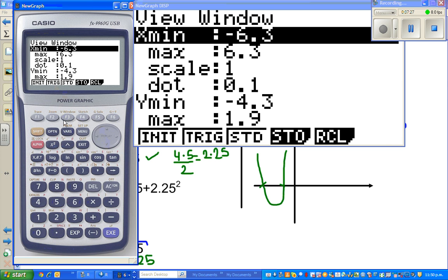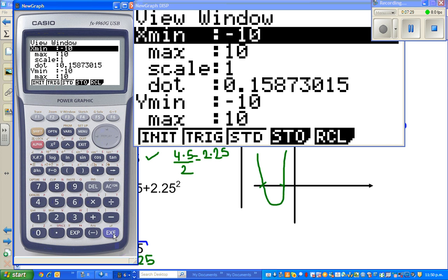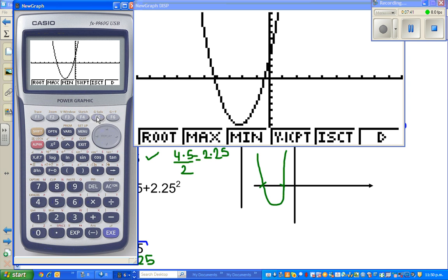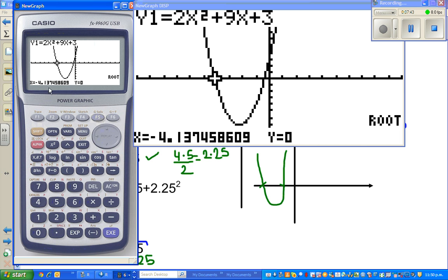Let me make a bigger scale, change it to 10 by 10. This is a parabola. This is one root and this is the other root. This is where the parabola becomes zero.